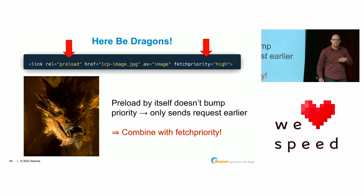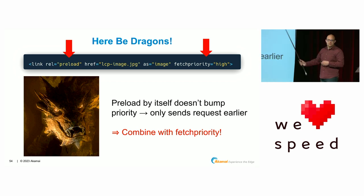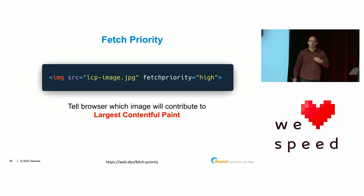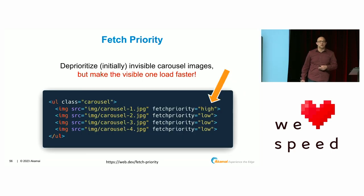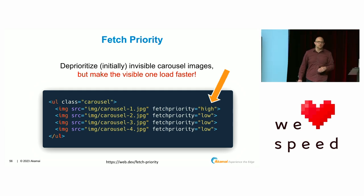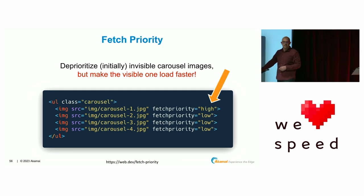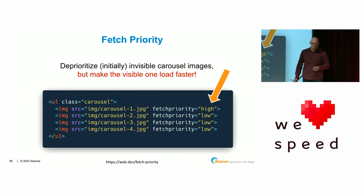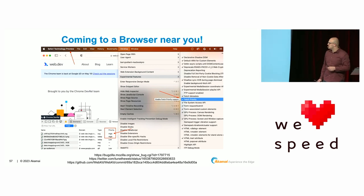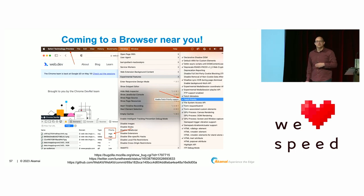I'm a big fan of fetchpriority for giving us more control. You don't have to use it combined with preload — you can also use it directly on image tags. You can also lower the priority of some resources — for example, in a carousel where only the first image is visible, all other images can be lower priority. Currently fetchpriority is only in Chrome, but other browsers are actively working on it — it's coming to both Safari and Firefox in the near future.